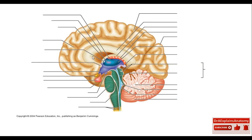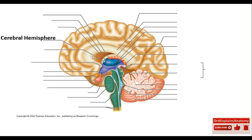Moving to the cross section of the brain. First, we can see one of the two cerebral hemispheres. Posteriorly is the occipital lobe. Remember that the cerebellum is the structure that will guide you toward the posterior aspect of the brain — so whenever you see the cerebellum, you can tell that this is the posterior aspect. That's the occipital lobe.